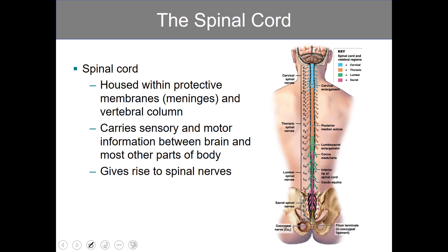The spinal cord is housed within protective membranes called the meninges, and within the vertebral column. The vertebrae contain a body and the vertebral arch, and it's the vertebral arch that creates the vertebral foramen that carries the spinal cord from the foramen magnum of the occipital bone all the way down to about L2, L3, where the spinal cord effectively ends.